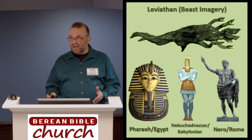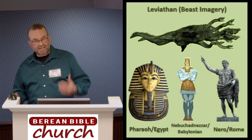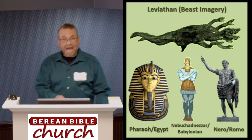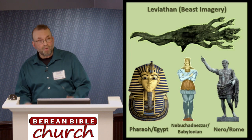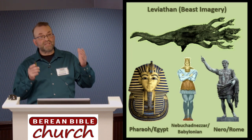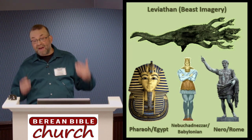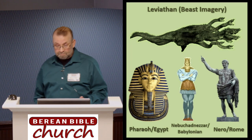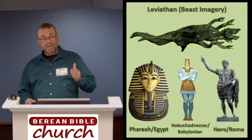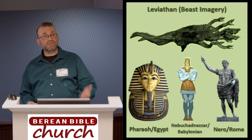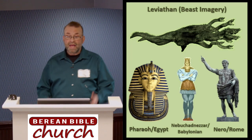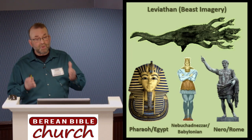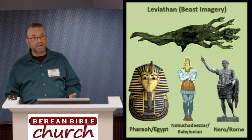In Revelation then, John simply takes up the mantle of the prophets who went before him — but now it's Nero following in the footsteps of these evil rulers prophetically cast as chaos monsters or sea beasts. This is all stuff that John expects his readers to be familiar with, and this includes the symbolism behind the mark of the beast.